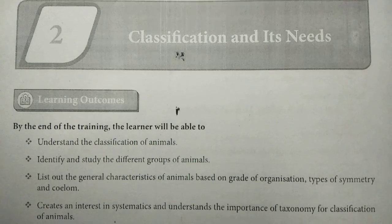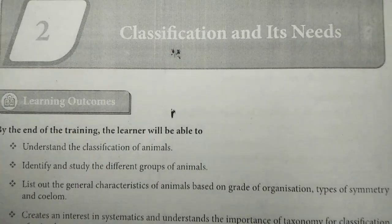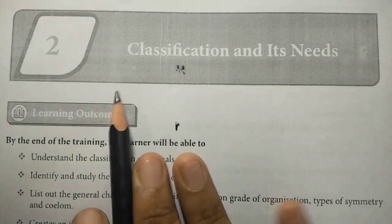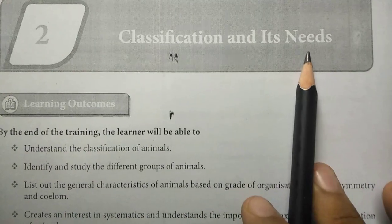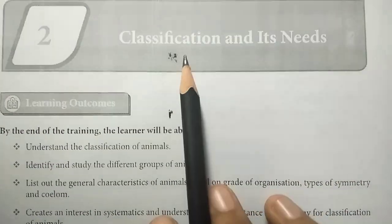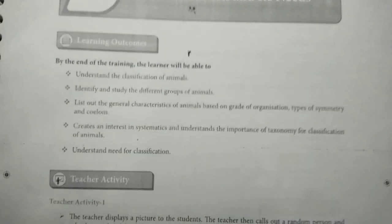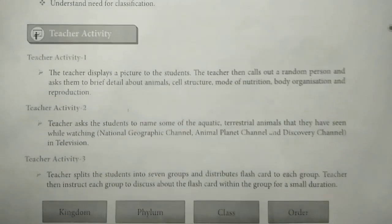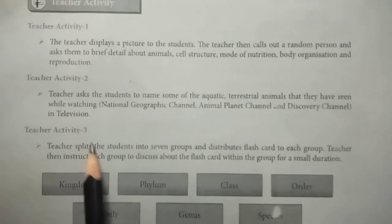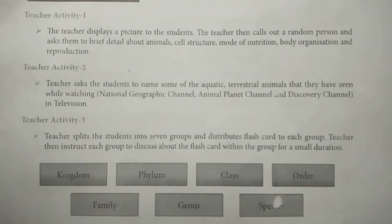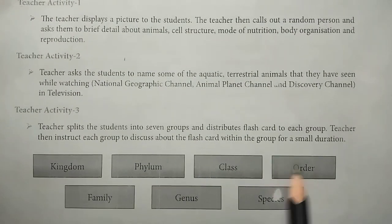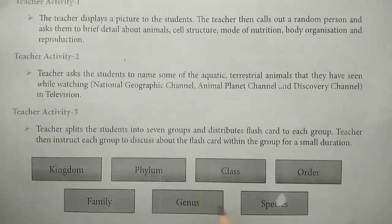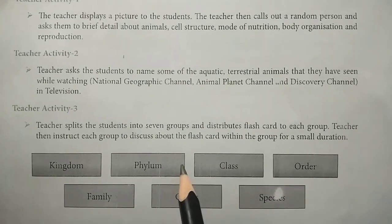We will see the first lesson answers, and next the second lesson: Classification and its Needs. Here we will see teacher activity 3 — kingdom, phylum, class, order, family, genus and species — we will see all of this.